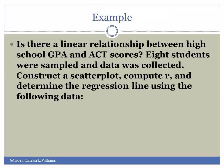In this video presentation, I am going to show you how to create a scatterplot, compute the correlation coefficient, and determine a regression line using the TI-83 calculator. Let's look at an example: Is there a linear relationship between high school GPA and ACT scores? Eight students were sampled and data was collected. Construct the scatterplot, compute r, and determine the regression line using the following data.